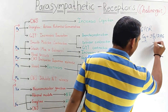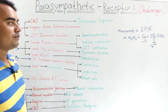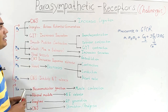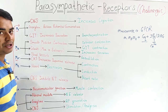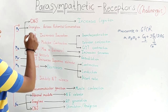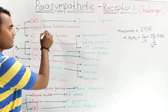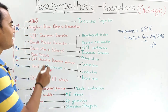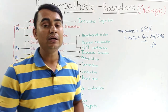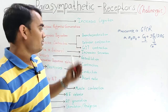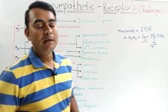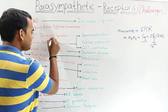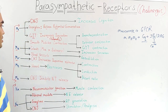This IP3/DAG pathway leads to an increase in calcium ion concentration, which produces the pharmacological effects. M1 receptors are located in the CNS, where they cause increased cognition. M1 is also located in the ganglion, where it generates action potentials. In the GIT, M1 acts on the gastric glands and increases secretions.